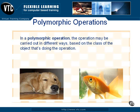The flip side of that is polymorphic operation. In a polymorphic operation, the operation may be carried out in different ways, based on the class of the object that's doing the operation. In other words, polymorphism allows you to treat derived class members in the same way as their parent class members. This lets objects of different types respond to the method calls of the same method, with each object responding with the appropriate behavior for its type.